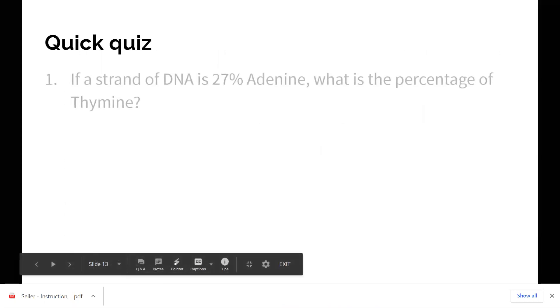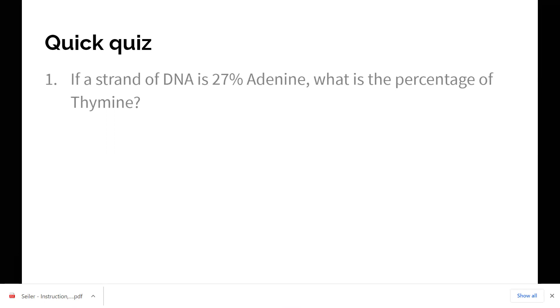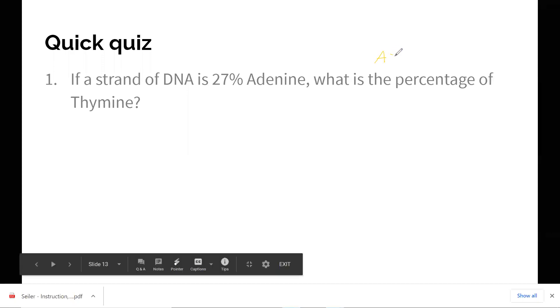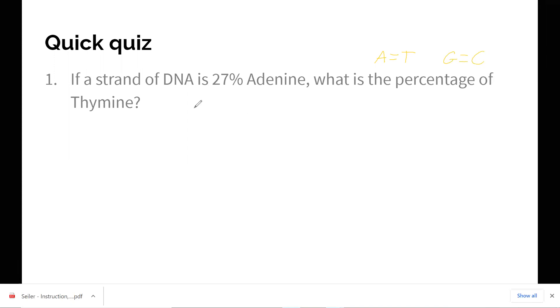So quick quiz. Yes, you do have to think about it. If a strand of DNA is 27% Adenine, what is the percentage of thymine? So I would like you to pause it right here for a couple of seconds and try and figure it out. Given the information of Chargaff's rule that A equals T and G equals C. So hopefully you pause it for a second. Hopefully you thought about it, but this is actually not a trick question. It feels like one, but it's not. If A equals T and G equals C, and I tell you that 27% of a sample is Adenine, that means that another 27% is going to be thymine as well, because A equals T. So if Adenine is 27, thymine is also going to be 27.